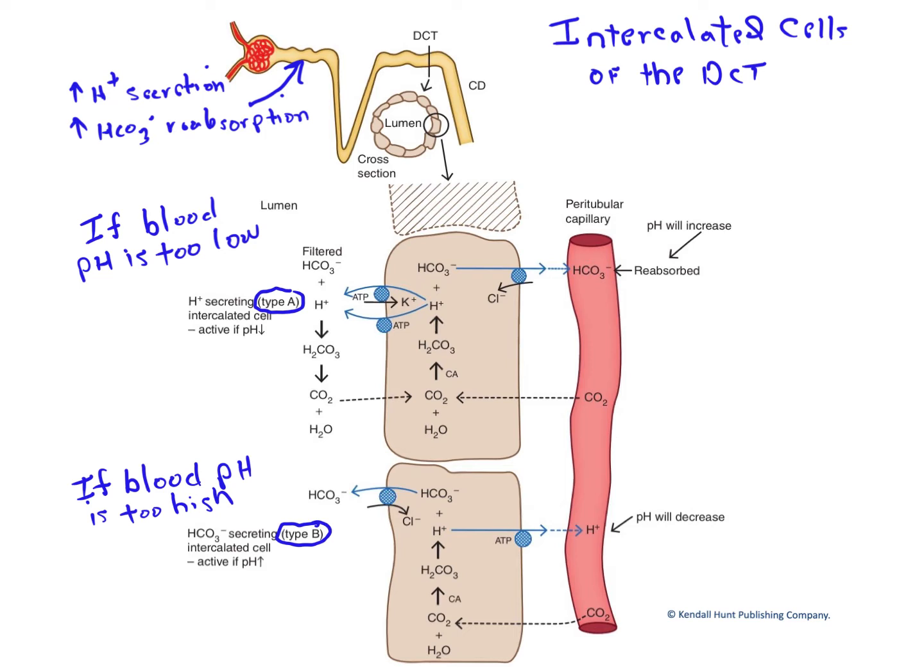Let's look at these one at a time. Suppose we have a person whose blood pH is too low.